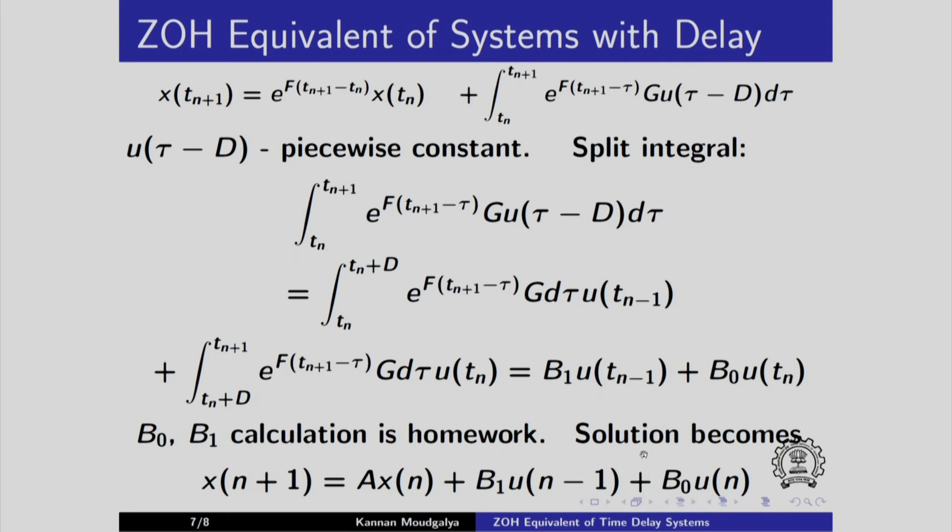The solution becomes when we substitute using the same method as before, namely uniform period and so on. It becomes this expression. But notice that this has an extra term b1 into u of n minus 1. So this is not in the standard form that we wanted.